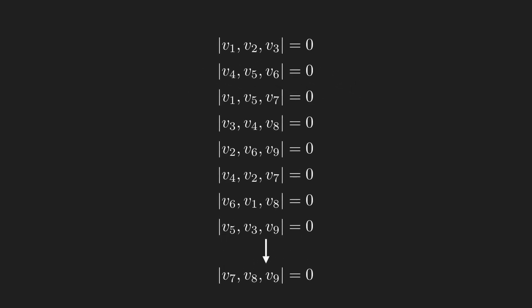This means that these 8 equations imply that the determinants of vectors 7, 8, and 9 equal 0, proving Pappus' theorem.